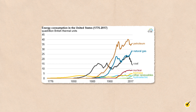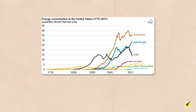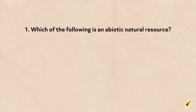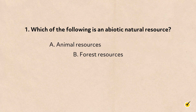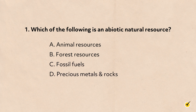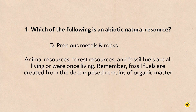Alright, now that we've covered everything, let's go over some review questions. Number 1: Which of the following is an abiotic natural resource? A. Animal resources, B. Forest resources, C. Fossil fuels, or D. Precious metals and rocks? The correct answer is D. Animal resources, forest resources, and fossil fuels are all living or were once living. Remember, fossil fuels are created from the decomposed remains of organic matter.